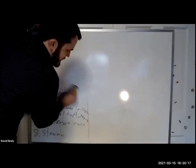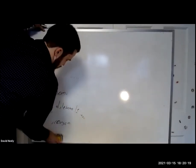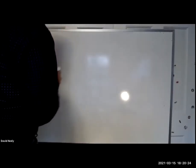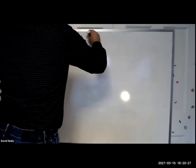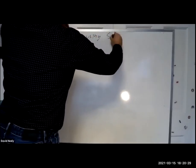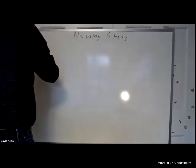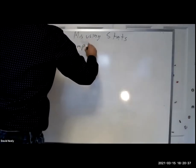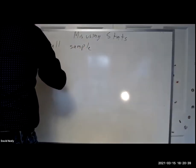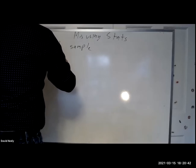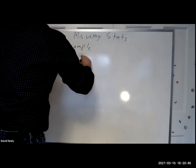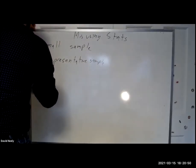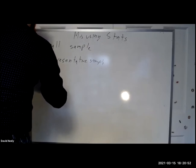The last group of fallacies can generally be grouped under the fallacy of misusing statistics. These include: one — small sample, two — unrepresentative sample, and three — questionable cause.